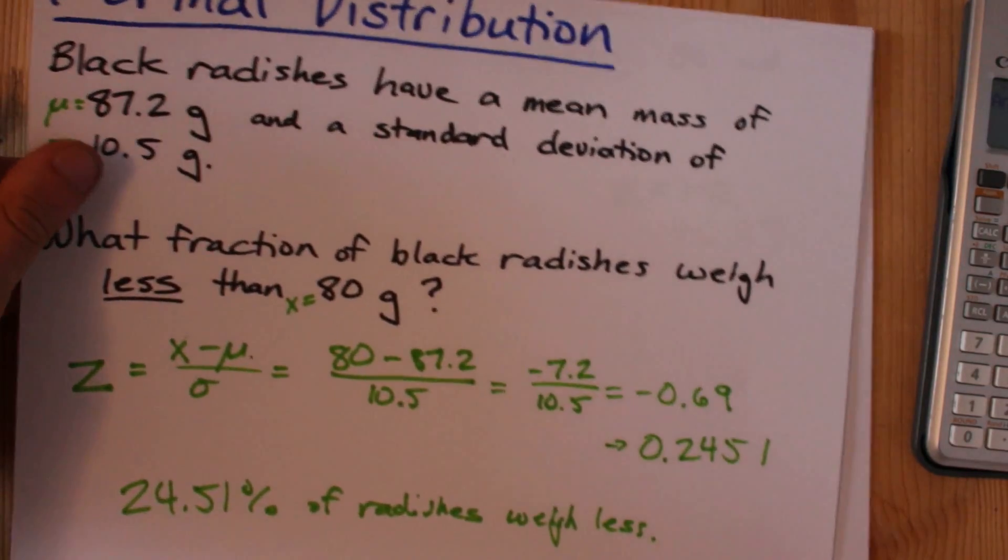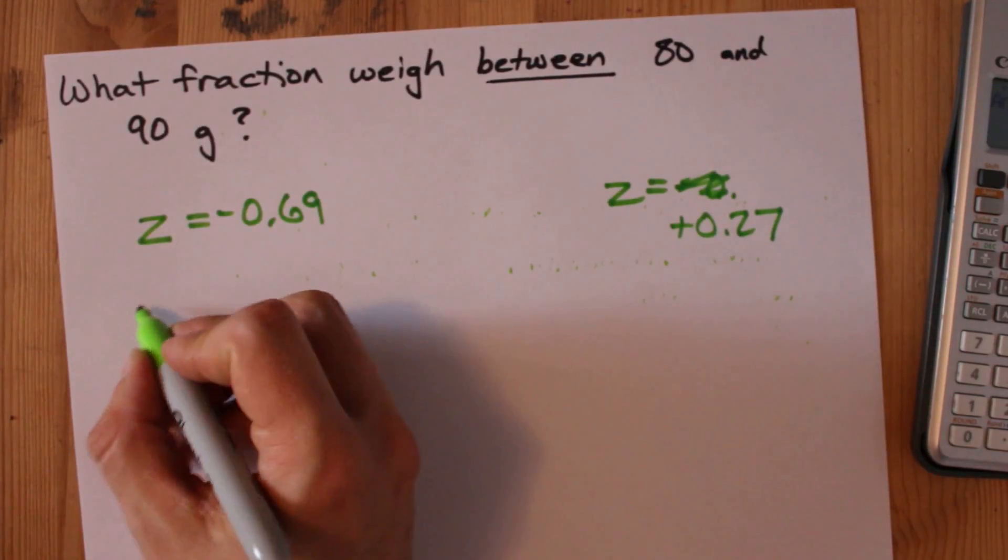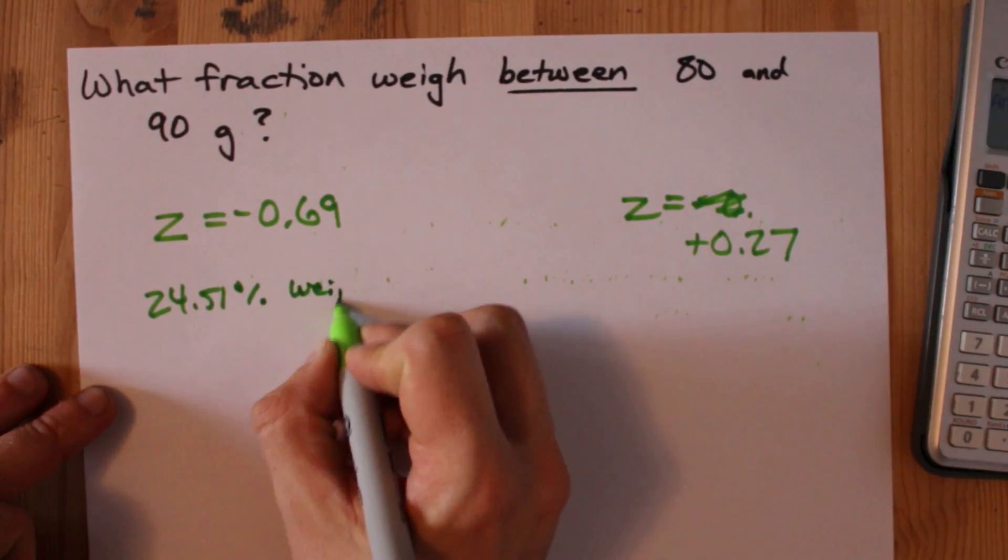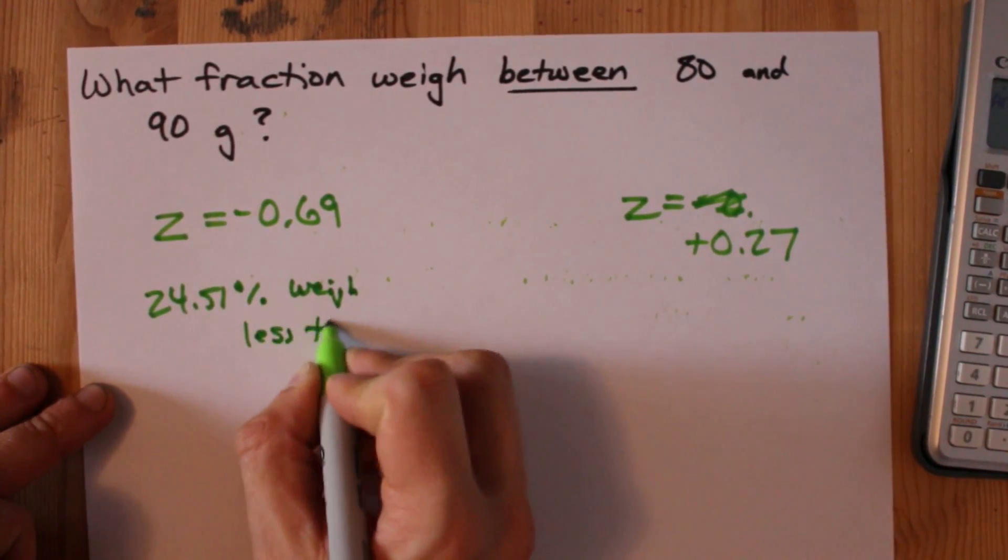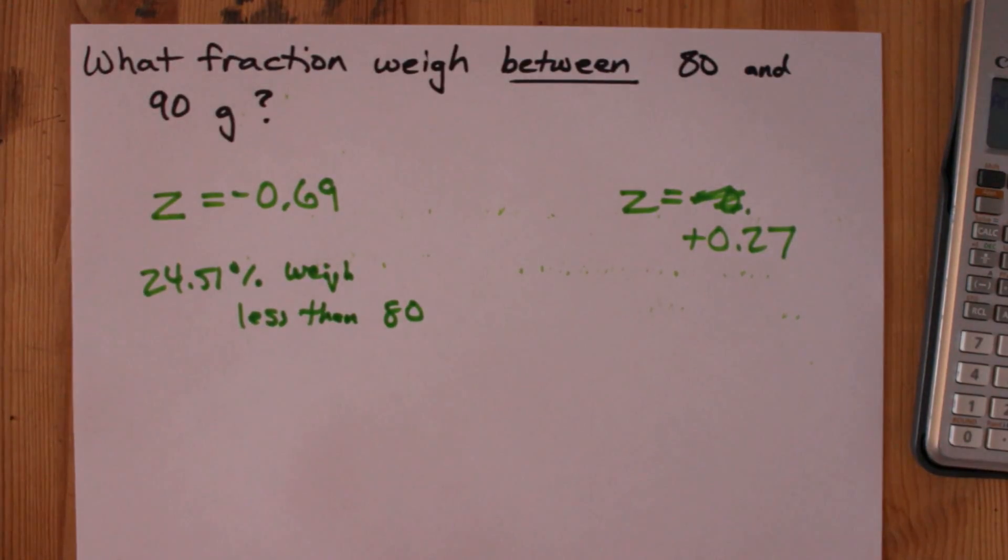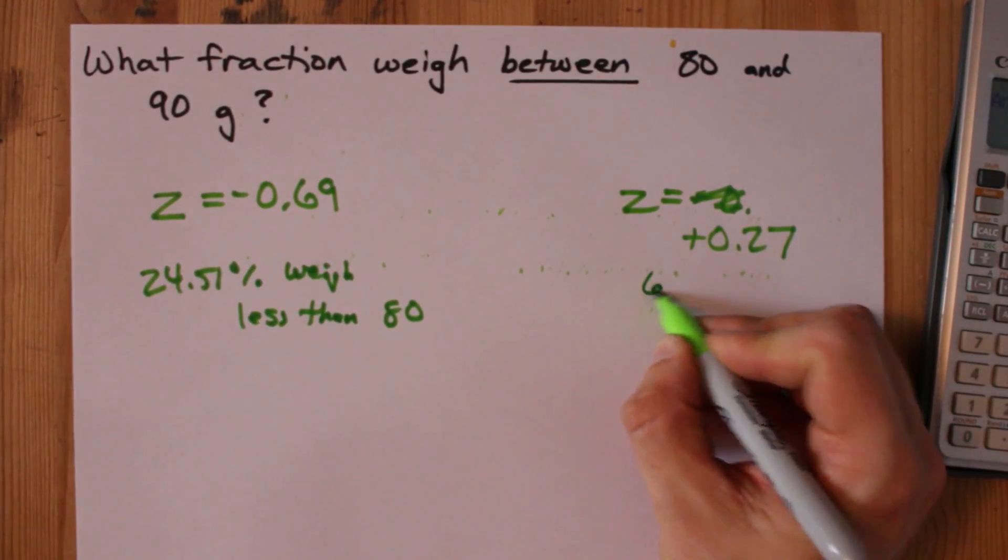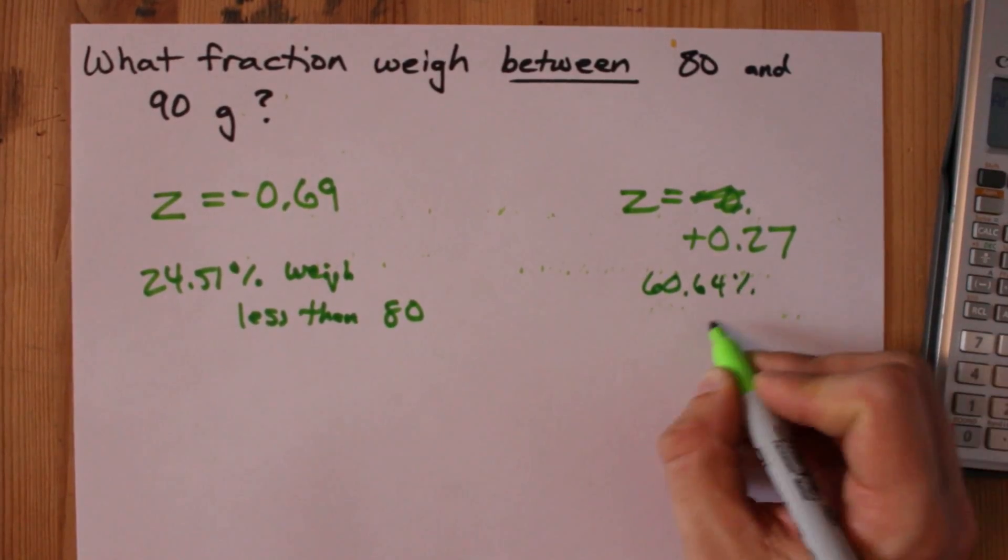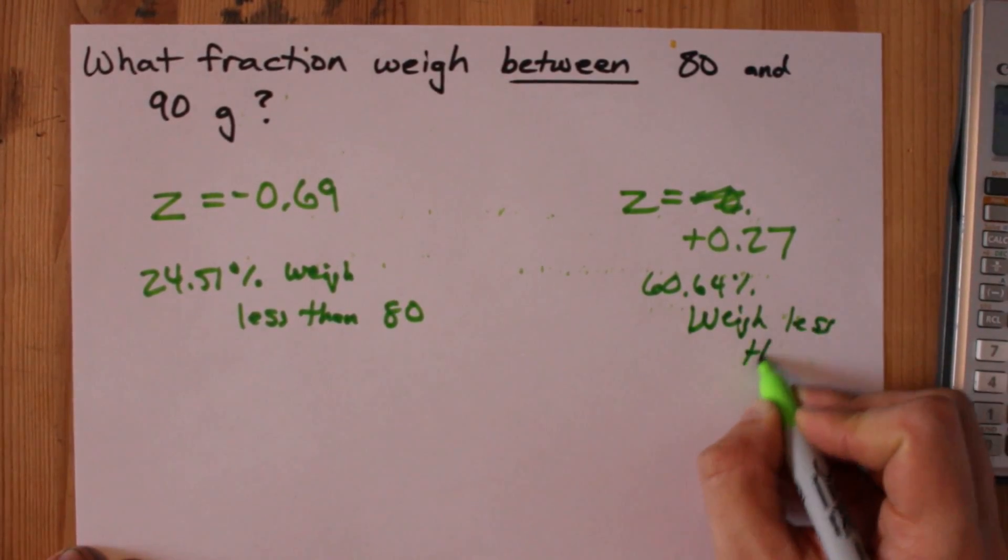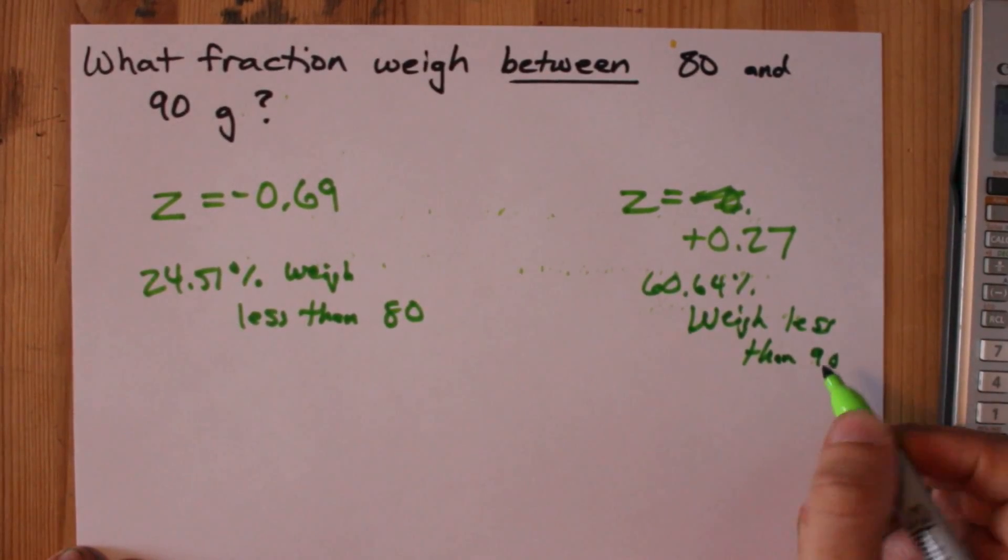It was 24.51% weigh less than 80. And my 0.27 gave me 60.64% weigh less than 90.